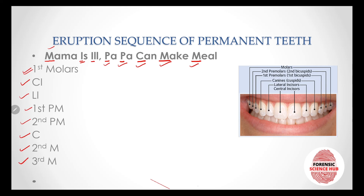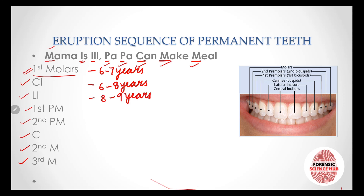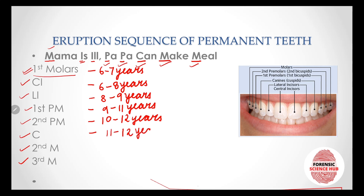The first molars erupt at the age of six to seven years. The central incisors erupt at six to eight years. The lateral incisors erupt at eight to nine years. The first premolars erupt at nine to eleven years. The second premolars erupt at ten to twelve years. The canines start to erupt at eleven to twelve years. The second molar starts to erupt at twelve to fourteen years. Lastly, the wisdom tooth — the third molar — erupts between seventeen to twenty-five years, and in some cases it does not erupt at all.